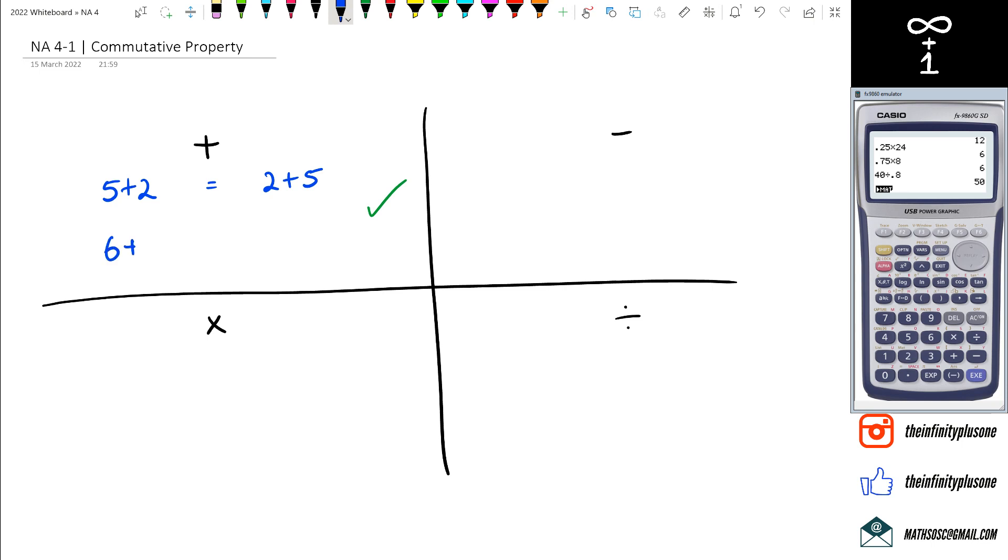If you have 6+7, then you're going to get 7+6. Now you might argue what happens if there's negative numbers involved. Well, we'll come back to that at another time. But let's look at this minus sign.